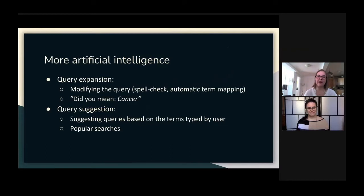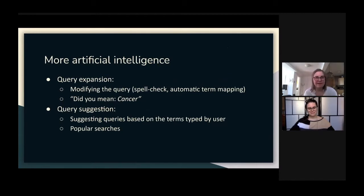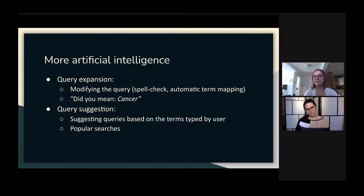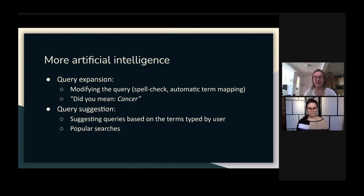Other ways PubMed uses artificial intelligence include query expansion and query suggestion. Query expansion modifies the query — whether through spell check, automatic term mapping, or other means — to better fit the search. For example, the algorithm assumes that if you spelled 'canker,' it might not be what you meant, spell-checks it, and suggests 'cancer' instead, with a line that says 'did you mean cancer?' Query suggestion suggests queries based on terms typed by the user. As you type 'cancer,' it gives you popular searches with that word to click on. These are behaviors users are very familiar with from Google.